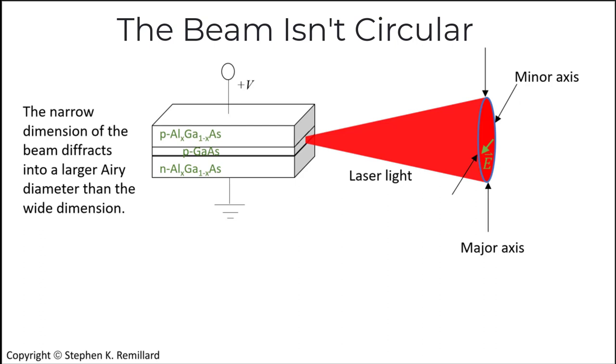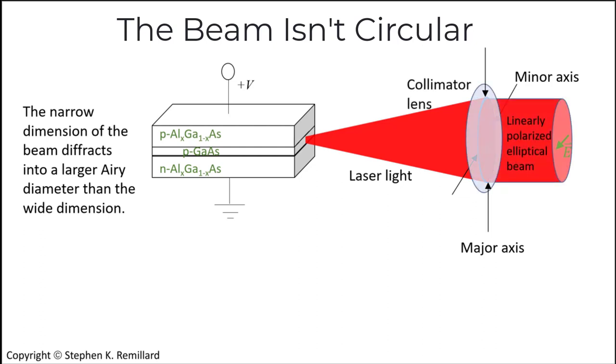The wave front is astigmatic - it appears to have originated from different focal points for the major and minor widths of the ellipse. A collimation lens puts a stop to the divergence, although not perfectly because with astigmatism the sagittal and tangential rays have different focal points. Furthermore, collimation does nothing for the often undesirable oblong shape of the beam.